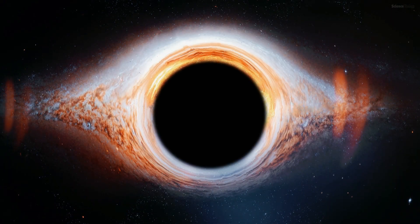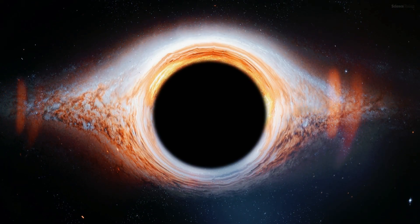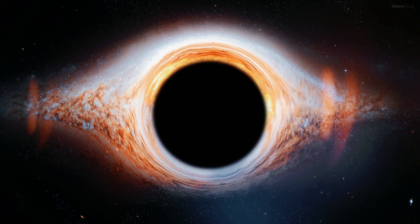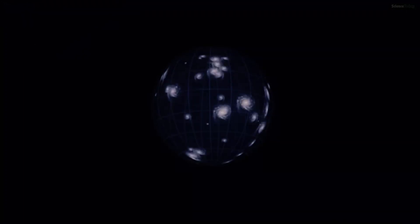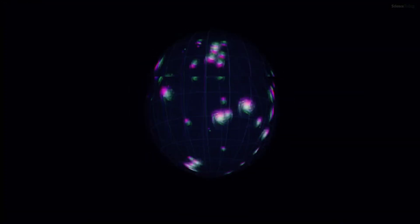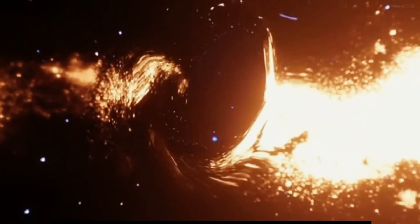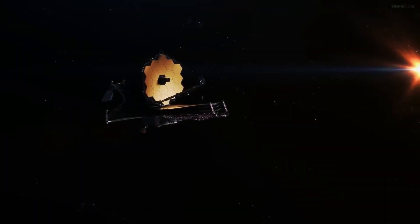Black holes don't just pull in matter. They twist and distort the very fabric of space and time. If the universe was born inside a black hole's singularity, it would inherit its rotational momentum. This could explain the cosmic spin preference observed by James Webb.